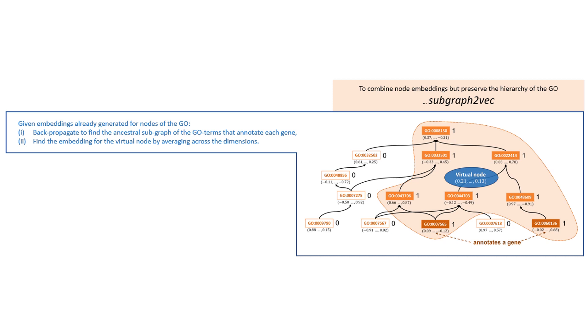Given these embeddings already generated, we first back-propagate from the annotating genes to create an ancestral subgraph, then we create this almost virtual node to summarize this ancestral subgraph by averaging across each dimension of the nodes embeddings that are in this ancestral subgraph. Notice in this diagram, the ones and zeros correspond to the binary features that we have already generated.